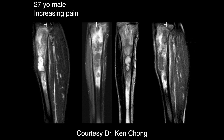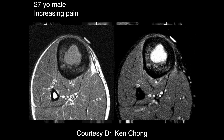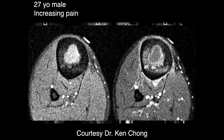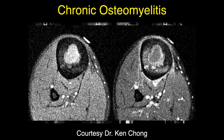In fibrous dysplasia, wouldn't the cortex be thinned rather than thickened? It can be either thickened or thinned — often you'll get both. But here we see nothing but thickening. We can see that there's a lot of signal within the cortex, and this was chronic osteomyelitis. But in situations like this, you'd always have to think about the possibility of adamantinoma.